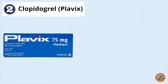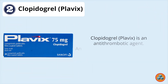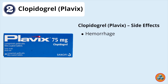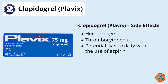Option 2: Clopidogrel, Plavix. Clopidogrel Plavix is an antithrombotic agent. Antithrombotic agents inhibit platelet aggregation and clot formation. Side effects include hemorrhage, thrombocytopenia, potential liver toxicity with the use of aspirin, and gastrointestinal distress. Dizziness and lightheadedness are not characteristic side effects of antithrombotic agents.